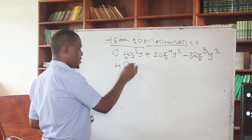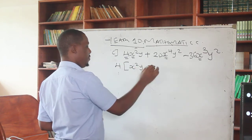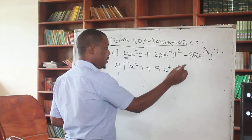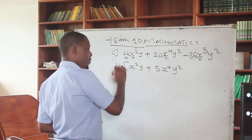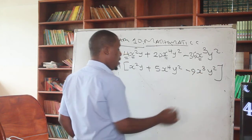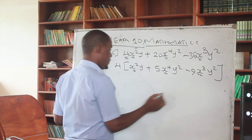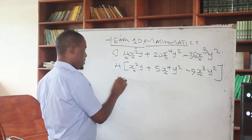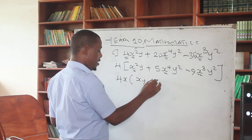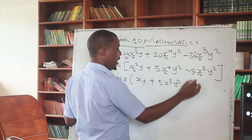...then we have: 4 times bracket x²y plus 5x⁴y² minus 9x⁴. So in this case we continue again — you can see our common factor is x. Here you have x, here you have x, and here you have x. So this is going to be 4x into bracket: xy plus 5x³y², then minus 9x³.